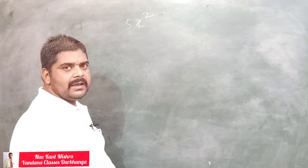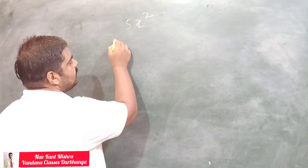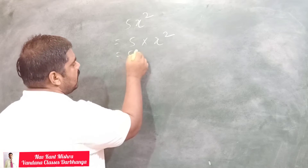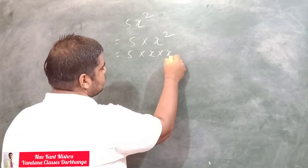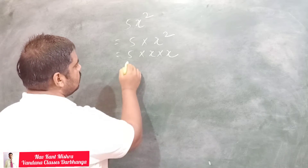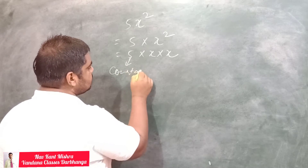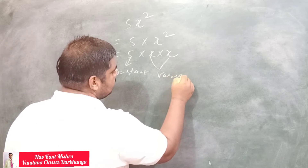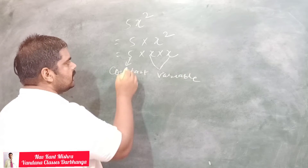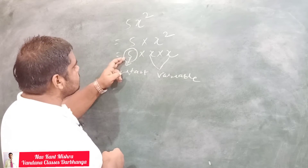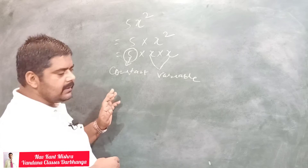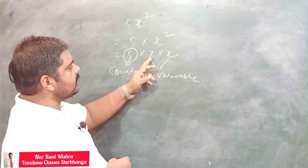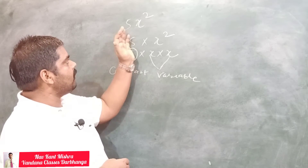Consider 5x squared, which is a term of an algebraic expression. The term 5x squared can be written as 5 into x squared, or as 5 into x into x. Here, 5 is a constant and both x's are variables. This is why 5 is known as a factor of 5x squared. Similarly, x into x is also a factor of 5x squared, or simply, x is a factor of 5x squared.